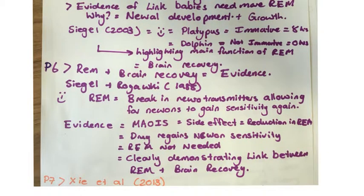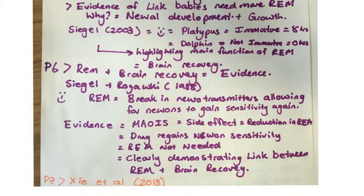In paragraph six, we move on to more supporting evidence for REM and brain recovery. Siegel and Rogueraki in 1988 state that REM allows for resting neurotransmitters, which allows those neurons to regain sensitivity, enabling neurotransmitters to be efficiently passed through the system. The supporting evidence for this is the MOIs — an anti-depression drug whose main side effect is a reduction in REM sleep. The drug itself regains neuron sensitivity, meaning that REM is no longer needed, reconfirming the relationship between REM and brain recovery.